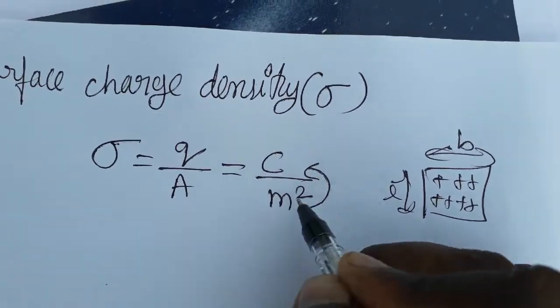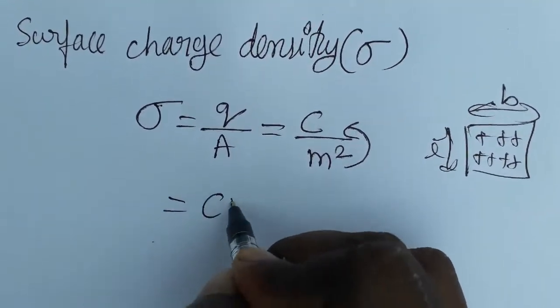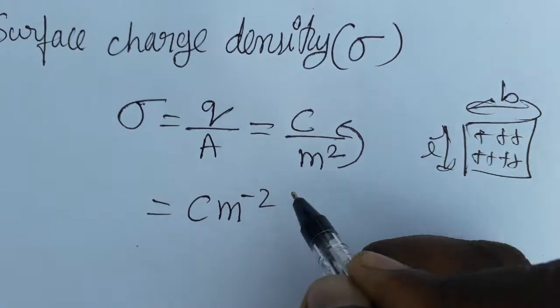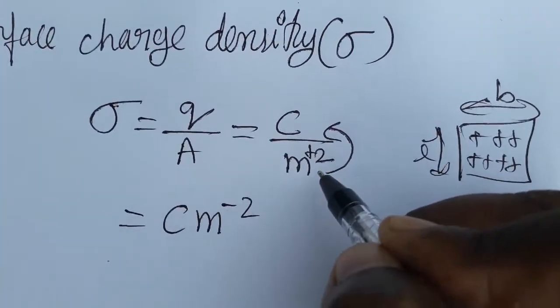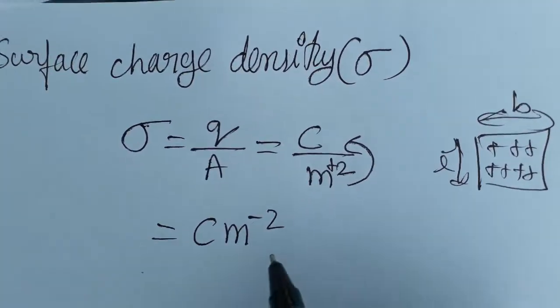From denominator I am taking it as numerator, so we will get coulombs meter minus two. Plus two I am taking as numerator, we will get as minus two. So it is the SI unit of surface charge density.